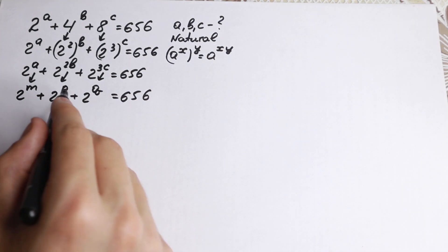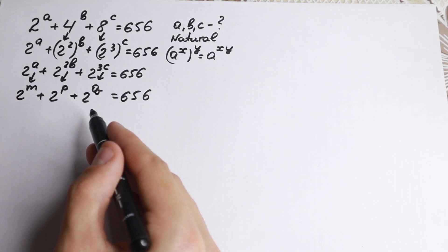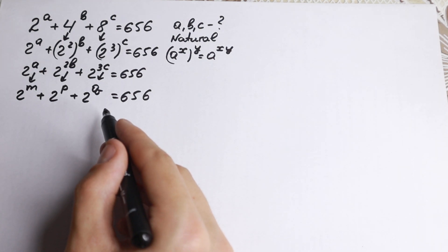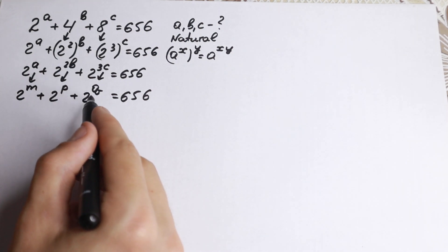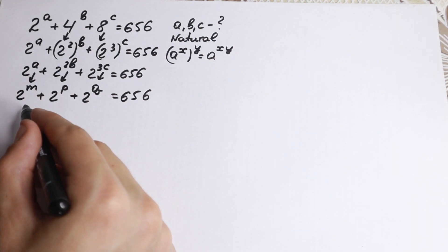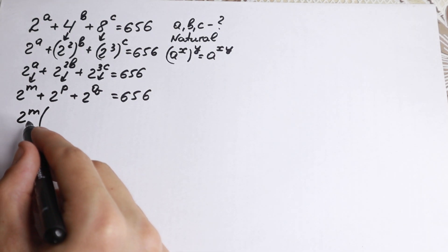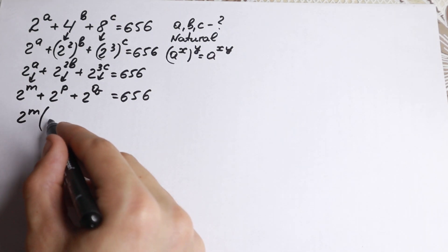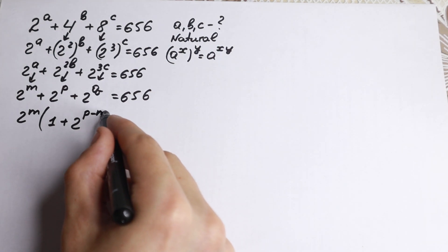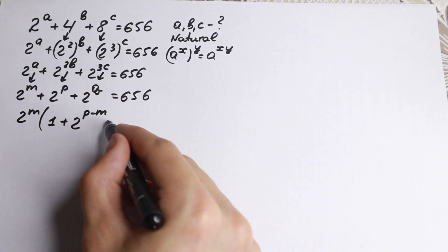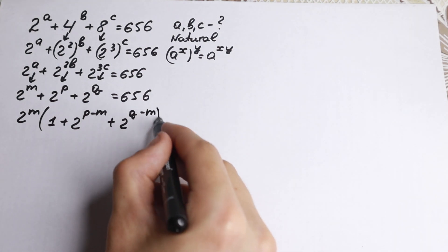What about the solution? Let's work with this substitution first, and at the end of the video we will find all possible roots. So we have 2 to the m, 2 to the p, 2 to the q. Let's factor out 2 to the power m from this expression. We get 2 to the m times the quantity 1 plus 2 to the power p minus m plus 2 to the power q minus m, equal to 656.